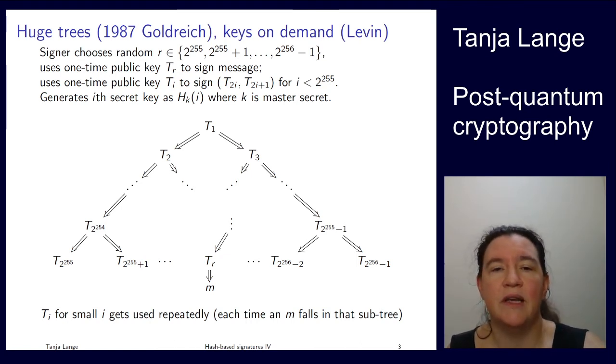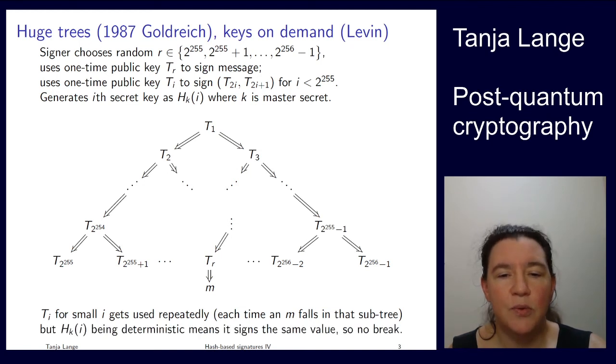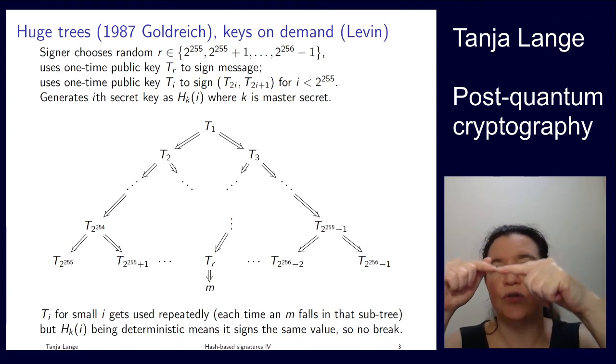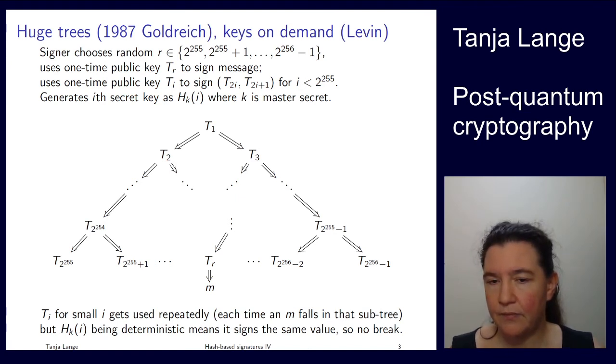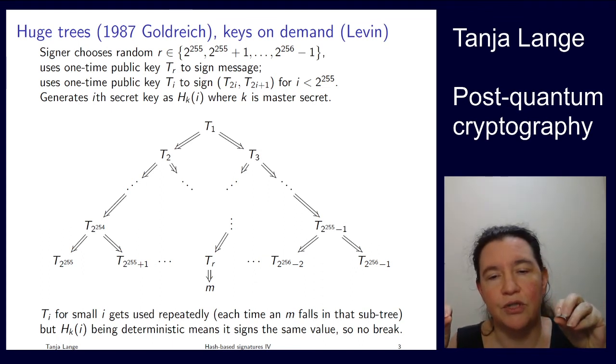However what I was so far explaining as the functionality requirement using the deterministic function this h sub k of i to get the secret it seems like a convenient way. But it's also very very important for the security. Because that means that whatever t3 signs is always exactly the same. So whenever you are in this right side of the tree, where t3 is a signature required, then you will compute up to there and t3 will be used to sign t6 and t7. Never anything else. And that means it's used exactly once. It is signing the same value that doesn't contradict it. It's a one-time signature scheme. So there is no break on that.